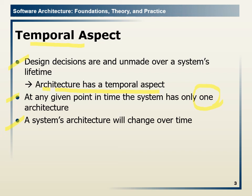A system's architecture will change over time. If you remember the twin peaks model, as the spiral zigzags downward with the specification, the architecture also becomes more detailed. When requirements are high-level at the start, the corresponding architecture is also high-level. As requirements become more detailed over time, the corresponding architecture also becomes more detailed.